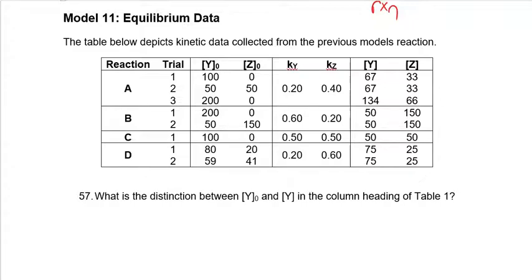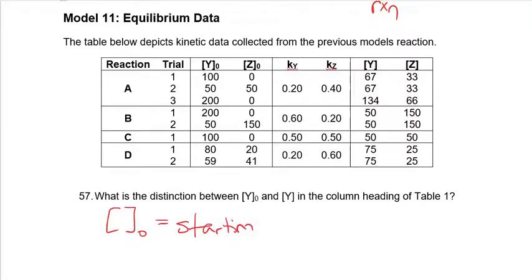Here I have a few different reactions of y and z reacting in a reversible state. So y can go to z and z can go to y, and I have a few different conditions. For example, in reaction a I did three different trials where I started with different concentrations and looked at ky, kz, which are constant for all of them, and then the difference between our final concentrations for y and z. Question 57: what is the distinction between y-not and y in the tables? Anything with a 'not' subscript always refers to a starting or initial concentration.